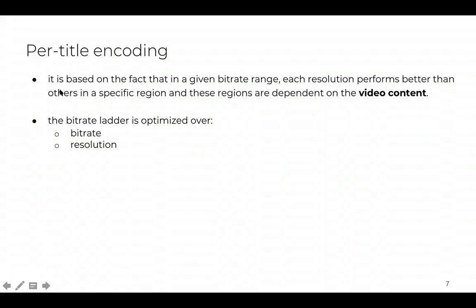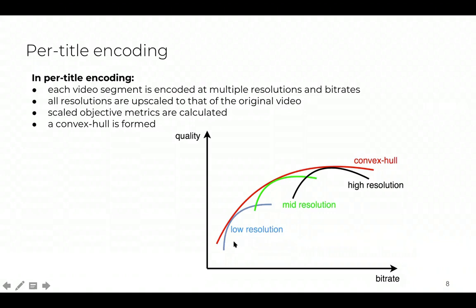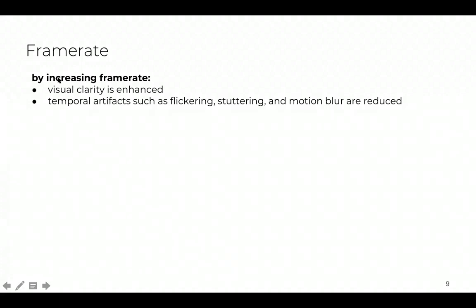Per-title encoding is based on the fact that, in a given bitrate range, each spatial resolution performs better than others in a specific region, and these regions are dependent on the video content. So bitrate ladders are optimized over bitrate and spatial resolution. In per-title encoding, each video segment is encoded at multiple resolutions and bitrates, all of these resolutions are upscaled to that of the original video, scaled objective metrics are calculated, and a convex hull is formed. Appropriate representations are then selected from this convex hull.